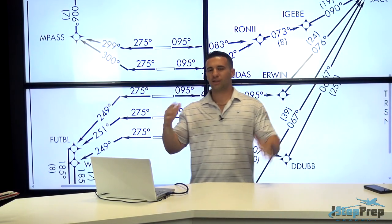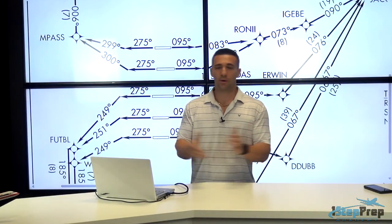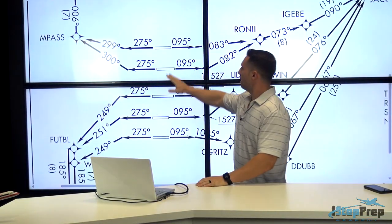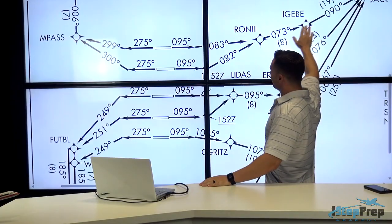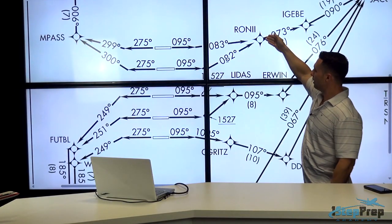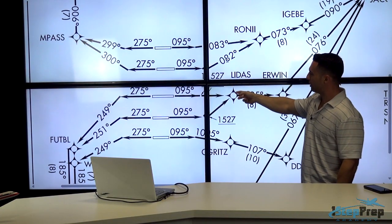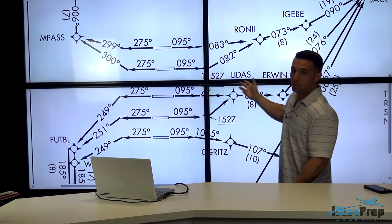So this is Atlanta. I just happened to pick Atlanta, but it could very well be any airport. Departing off to the east, we have a waypoint called Roni. We also have one down here called LIDAS. I think I'm pronouncing it right.